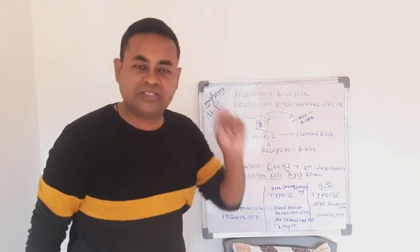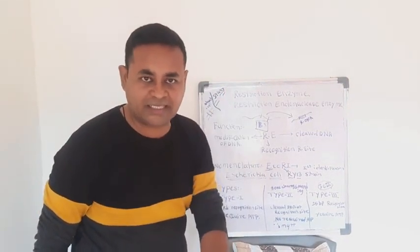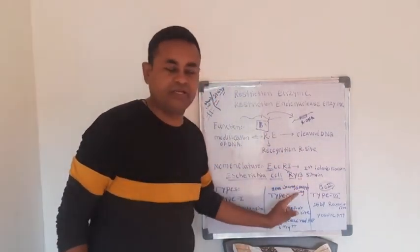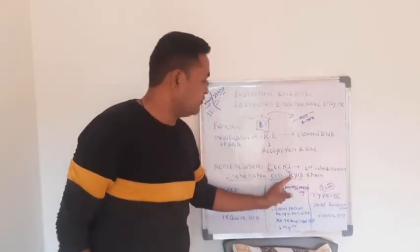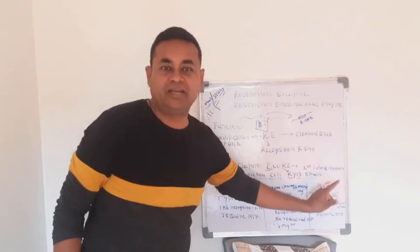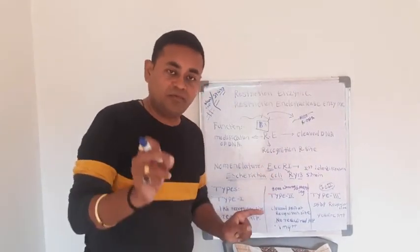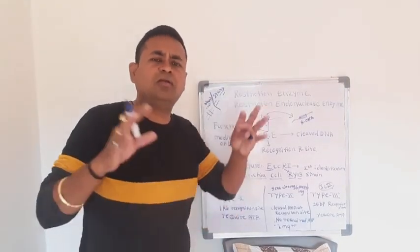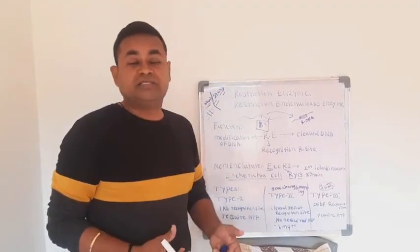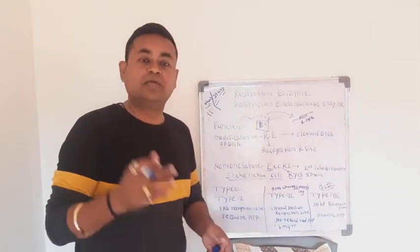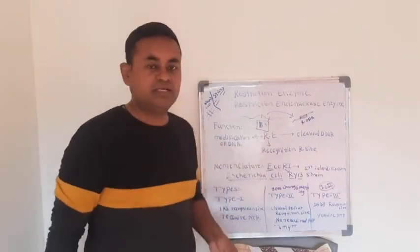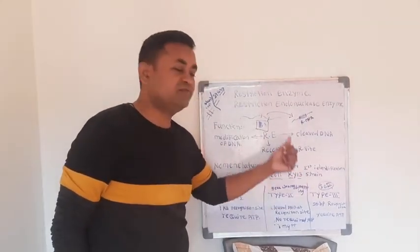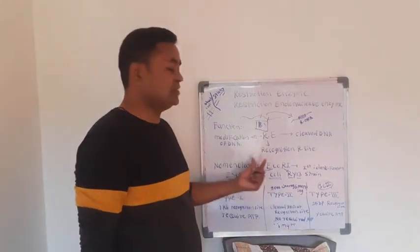We are isolating this restriction enzyme from Escherichia coli. 'co' is written in small letters because it is the species name — coli. 'R' stands for the strain — which strain is used. R is the strain designation, and '1' means it was the first restriction enzyme identified in that strain. Therefore, we call it EcoRI.